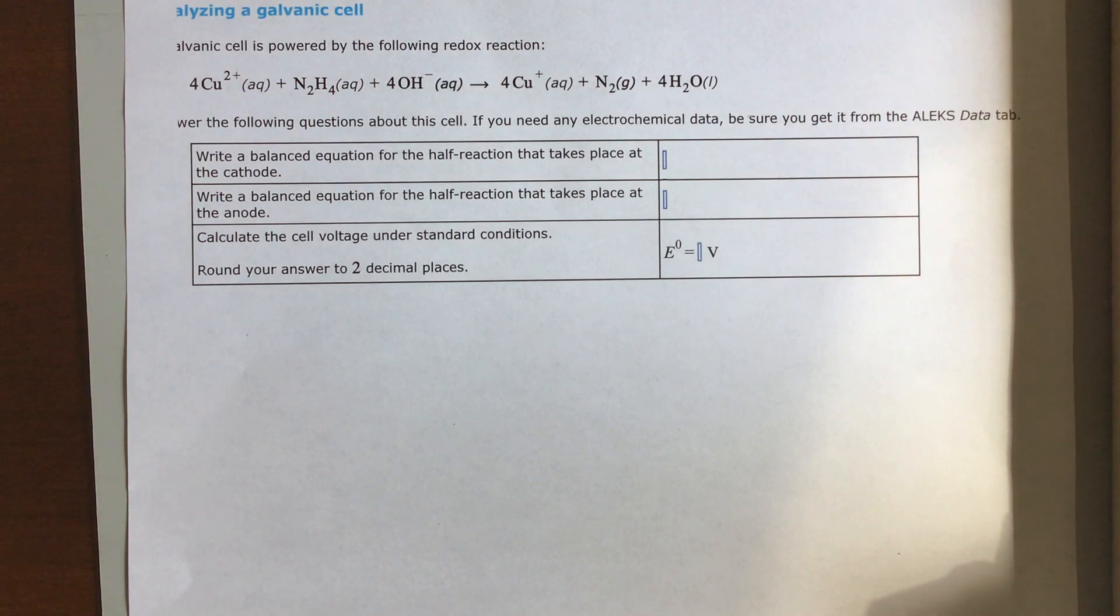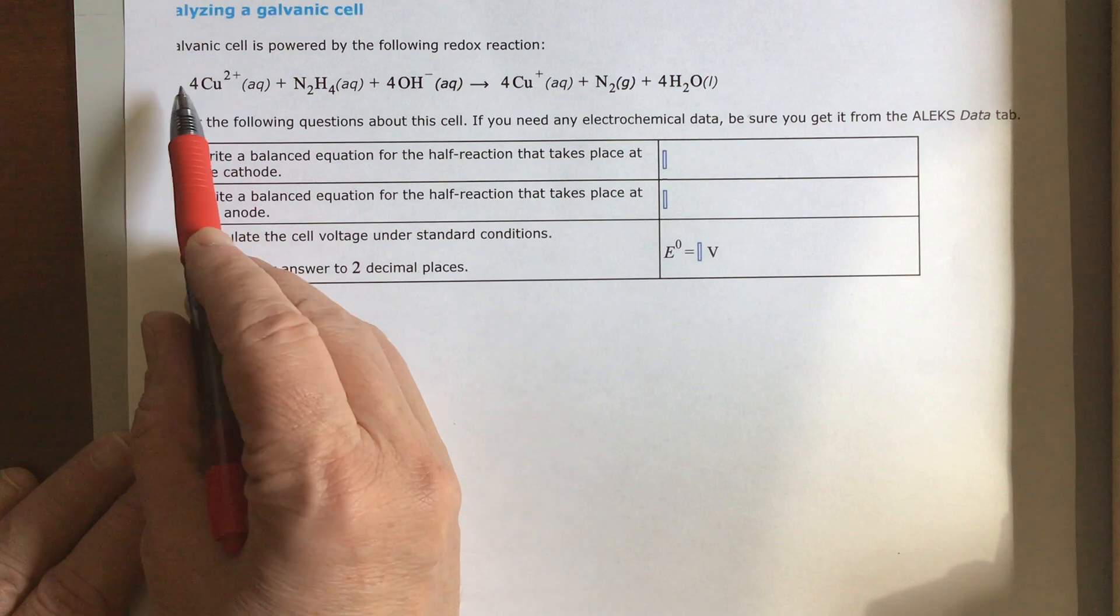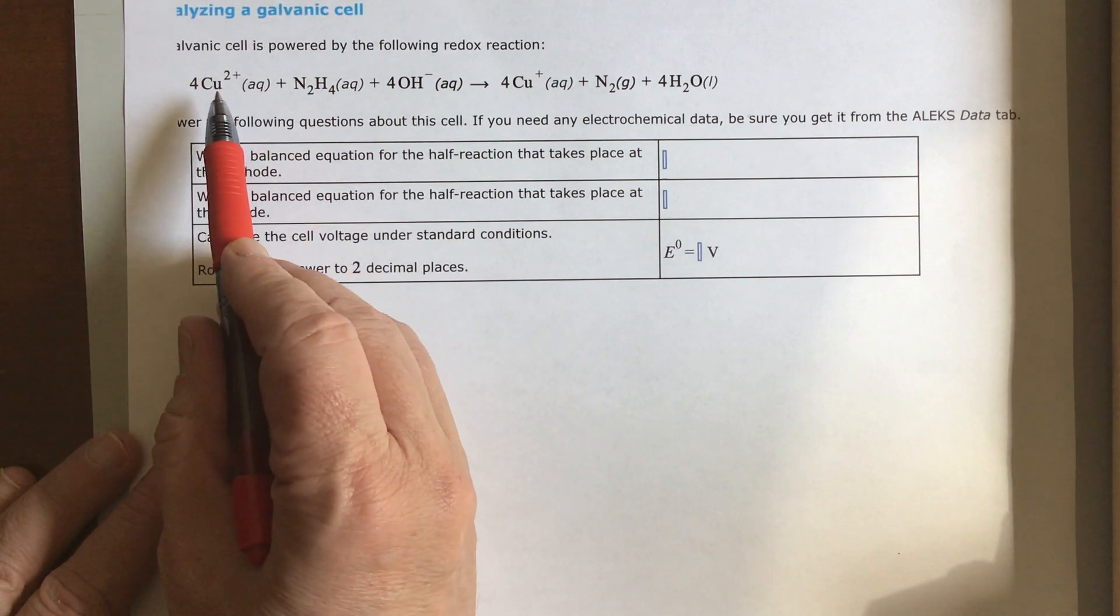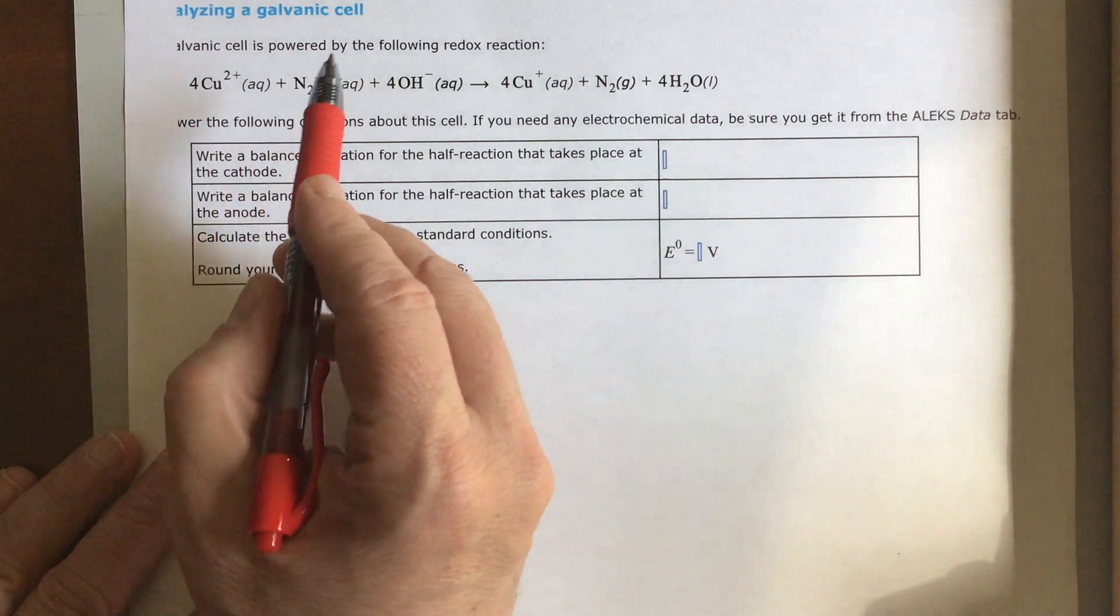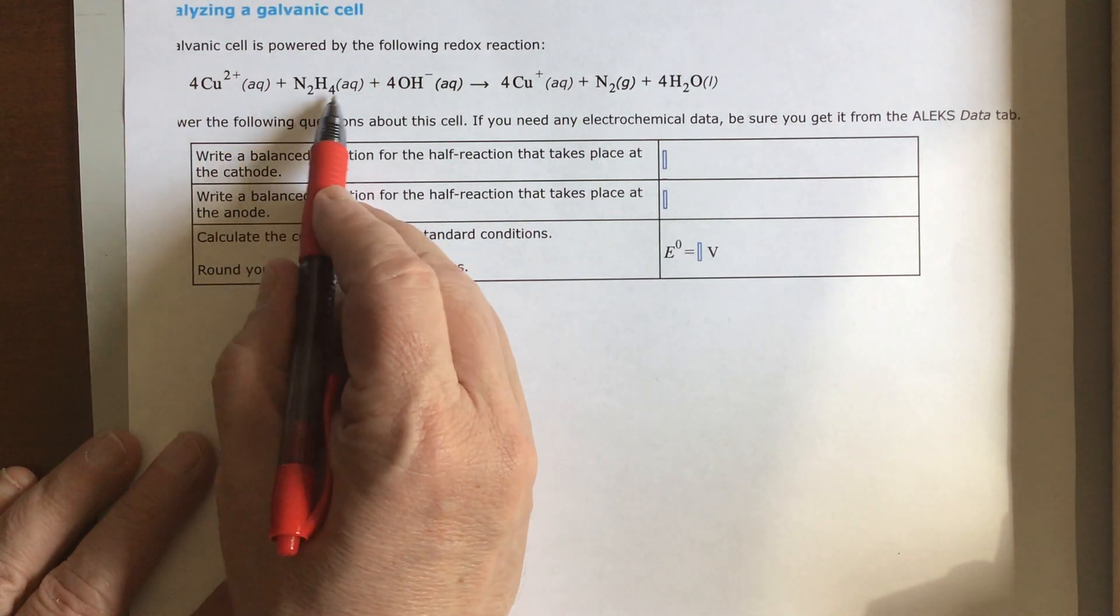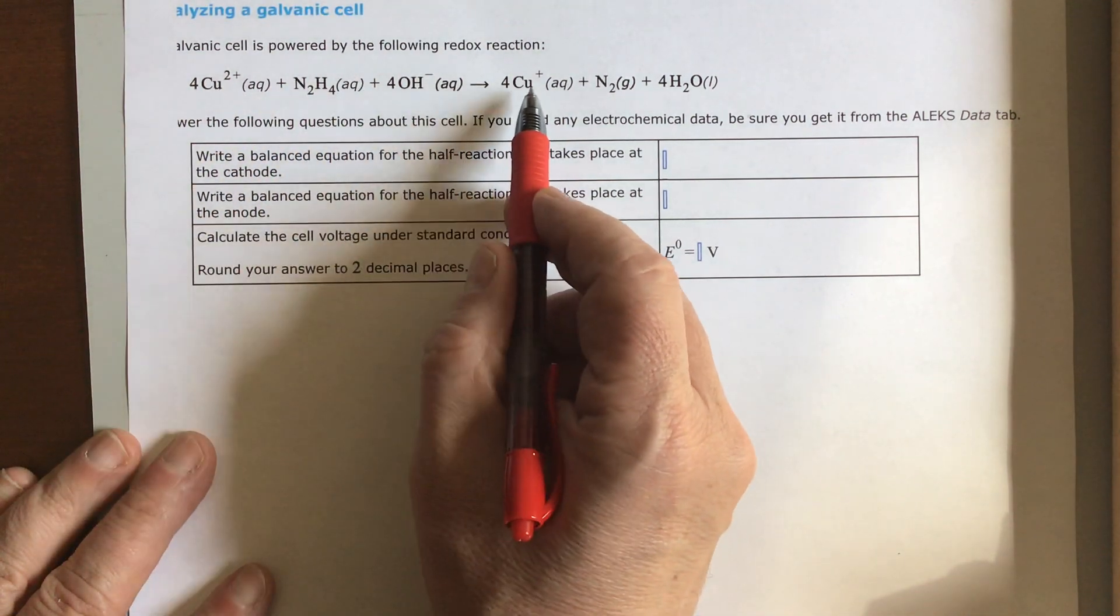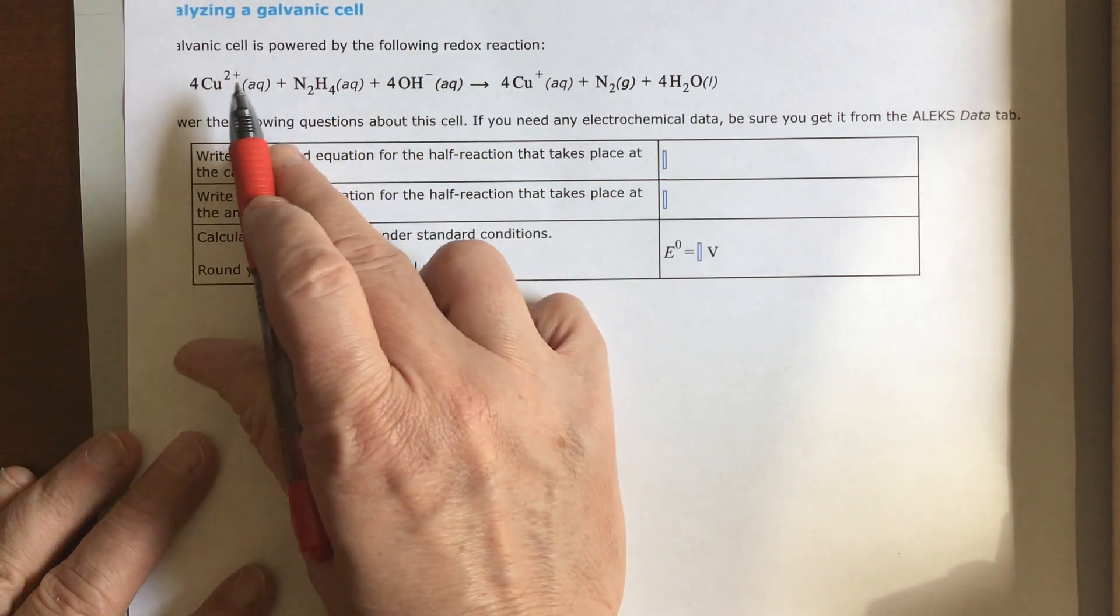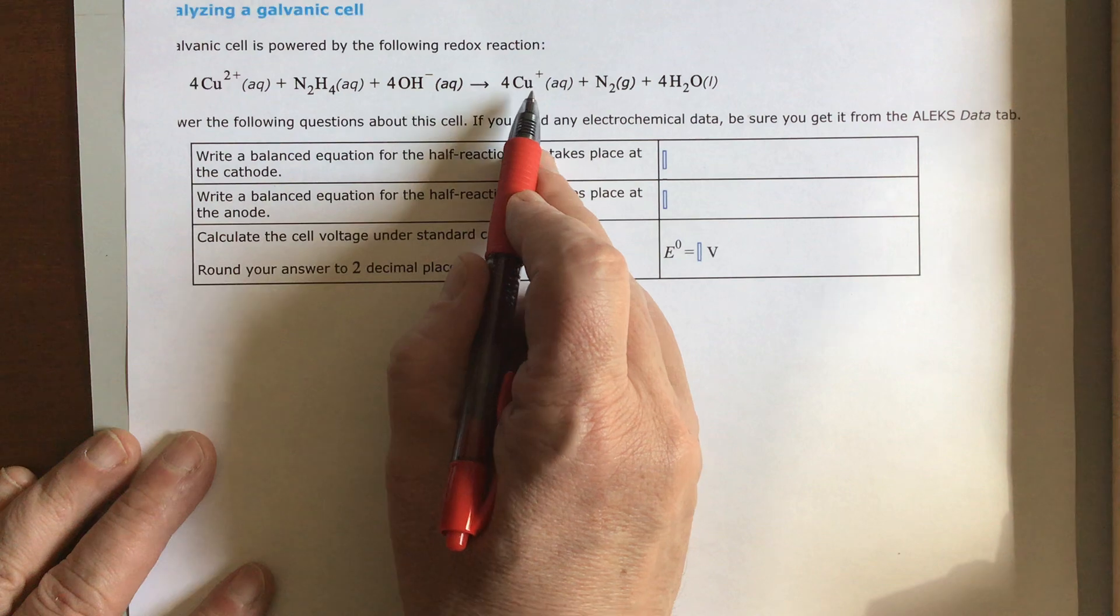We'll look those voltages up in the ALEX data table. So looks like here we're starting with a copper ion, aqueous in solution, and this is a nitrogen compound called hydrazine. The copper is going to go down in charge from two plus to one plus.